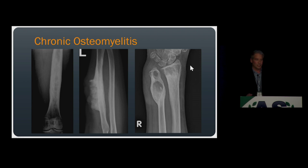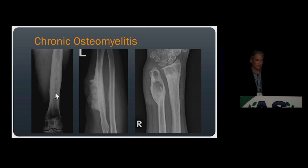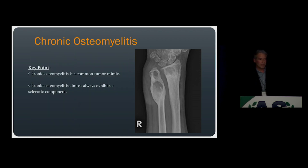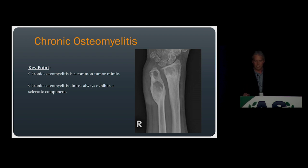Finally, let's finish osteomyelitis by discussing chronic osteomyelitis, which is a great mimicker and can present in a myriad of ways. It can present with pure sclerosis with medullary and cortical sclerosis, with exuberant mass-like periosteal reaction, or with a mixed lytic and sclerotic process due to intraosseous abscesses. All of these share one thing in common: a sclerotic component. In chronic infection, you almost always have a sclerotic component as the body responds to the infection. The key point: chronic osteomyelitis has many faces, is a common mimic of tumor, and it should have a sclerotic component.